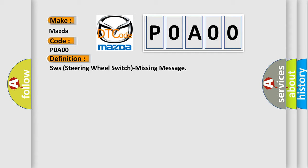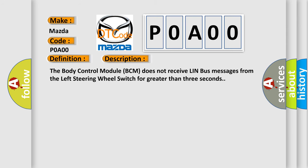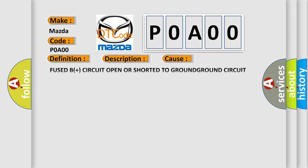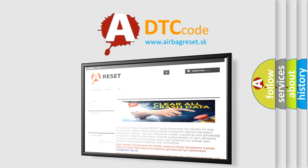Here is a short description of this DTC code. The Body Control Module (BCM) does not receive LIN bus messages from the left steering wheel switch for greater than three seconds. This diagnostic error occurs most often in these cases: fused B+ circuit open or shorted to ground, ground circuit open, LIN bus circuit open, left steering wheel switch fault, or Body Control Module (BCM) fault. The Airbag Reset website aims to provide information in 52 languages. Thank you for your attention and stay tuned for the next video.